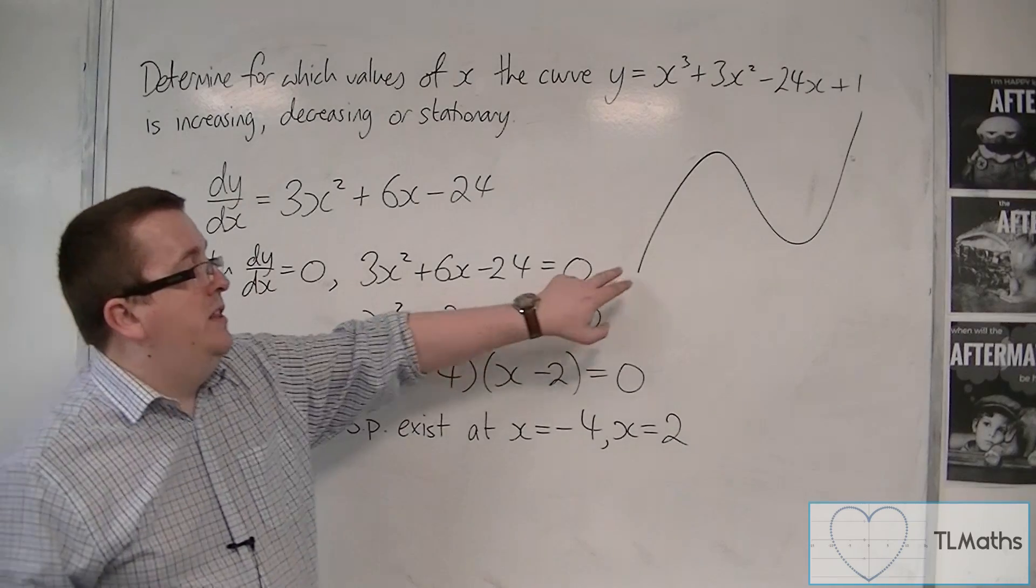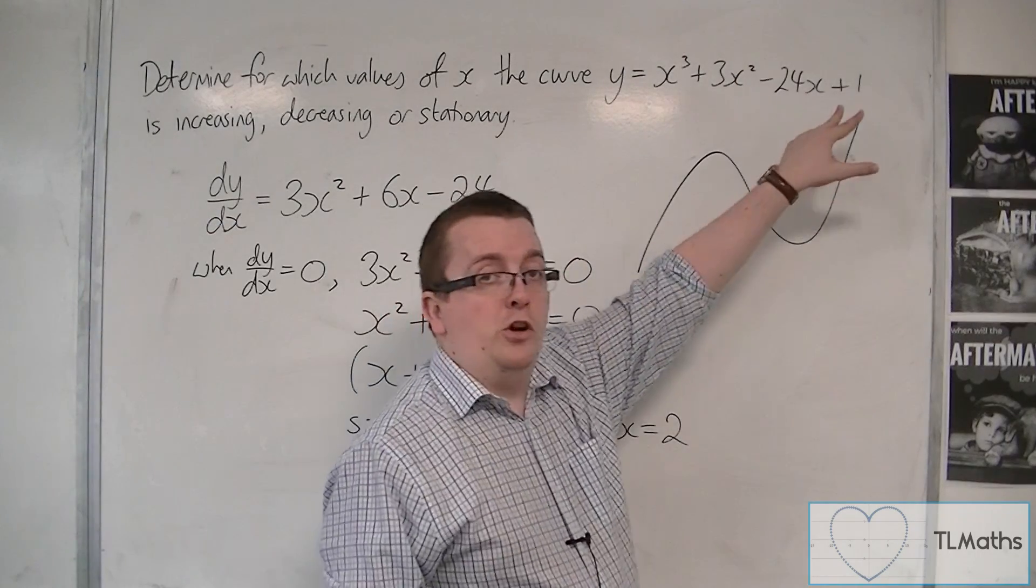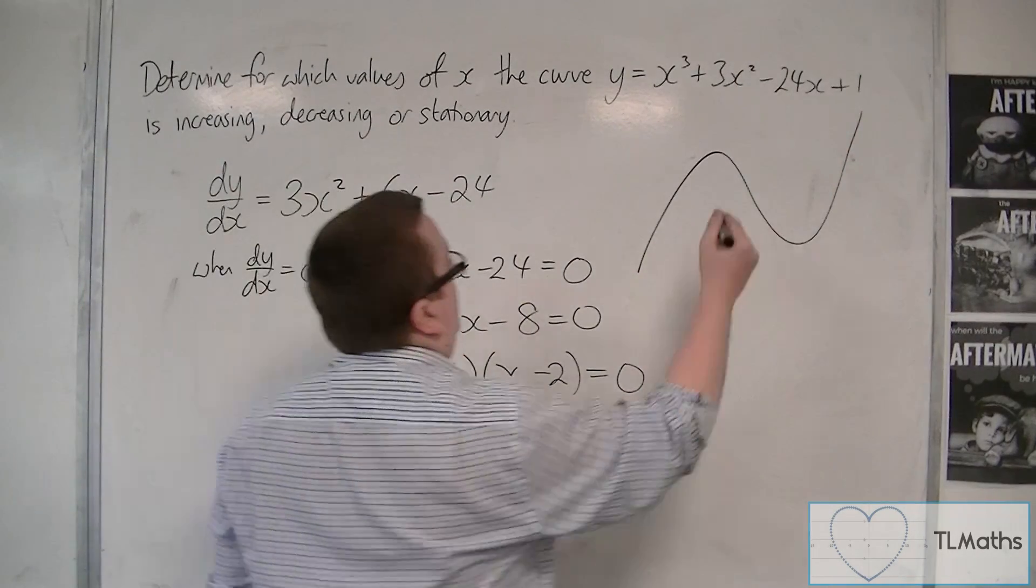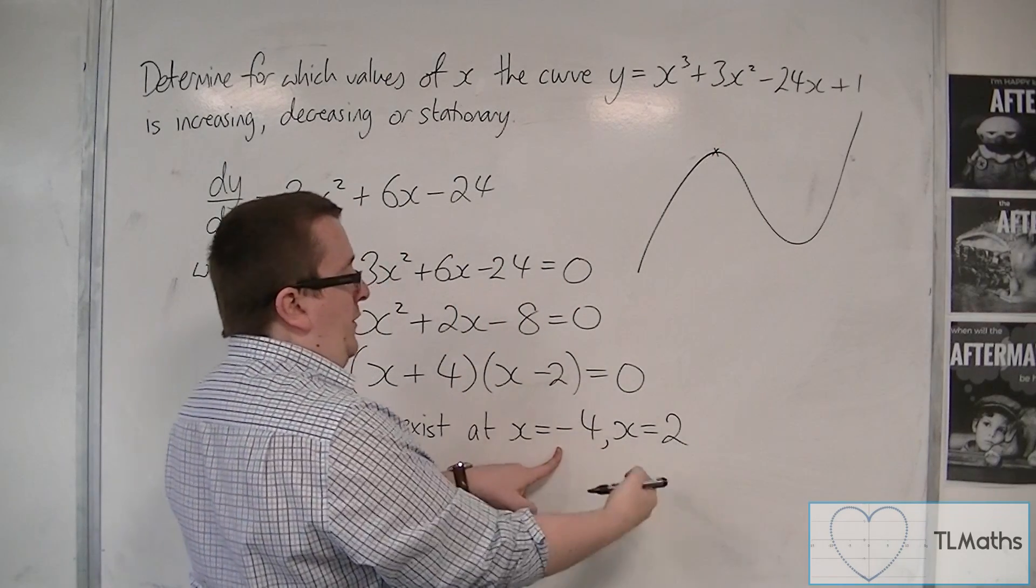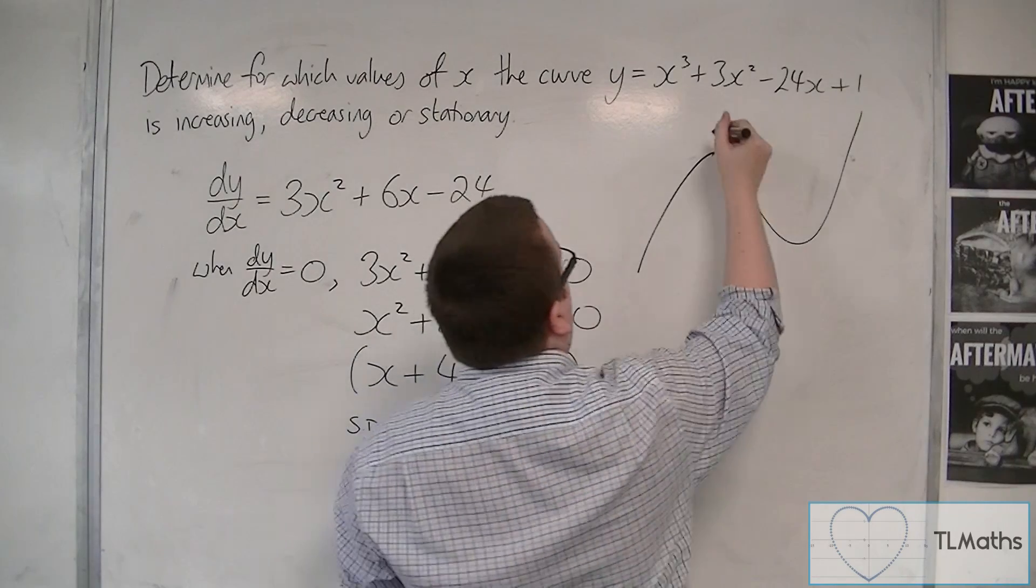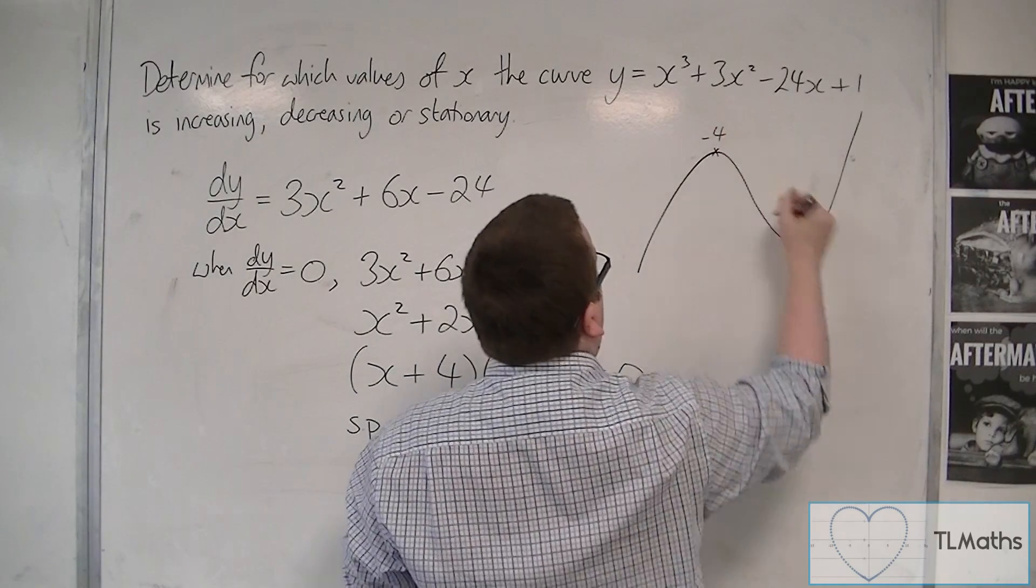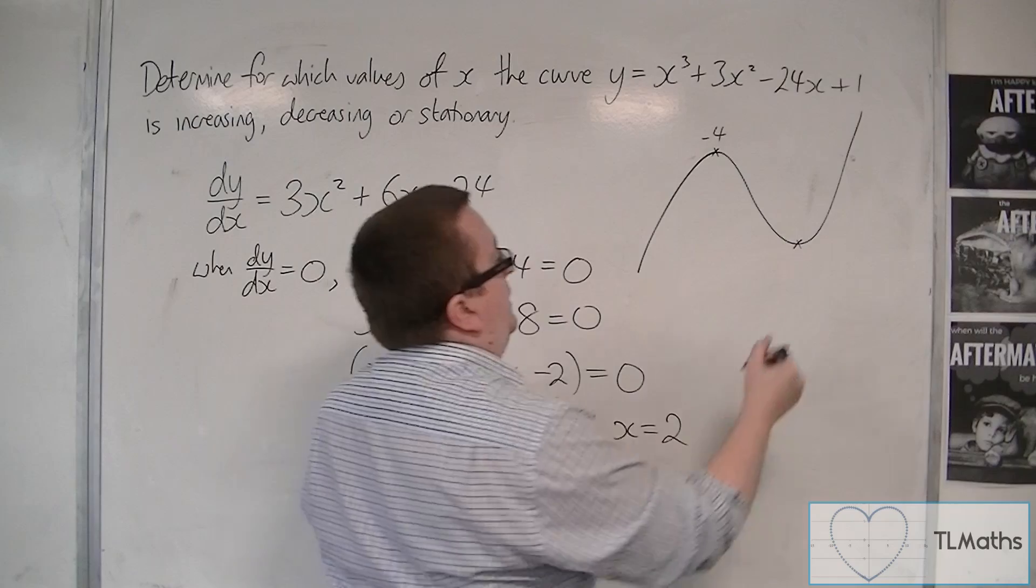It must start in the bottom left, end up in the top right. And this point here is when x is equal to minus 4, because that's the lower of the two. So that's at minus 4, and this one must be the 2.